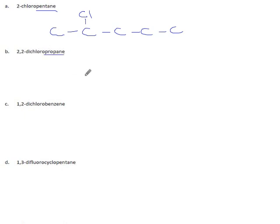2,2-dichloropropane. Propane's three carbons. Put two chlorines, both on the second carbon. So, that's a Cl, and that's a Cl.